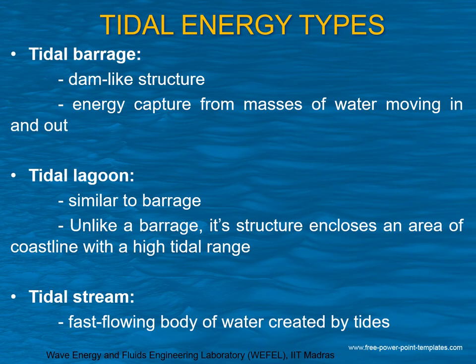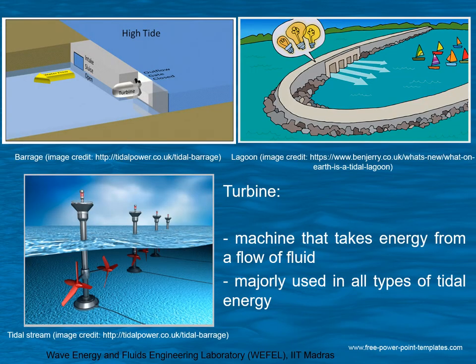It is not as big as a dam, and you can see the structure in the forthcoming slides. The last type is a tidal stream — a fast-flowing body of water created by tides. These three types of tidal energy are majorly used all around the world. In this slide you can see all three types: the top-left picture shows the barrage, the right side shows a lagoon, and the bottom shows the tidal stream.